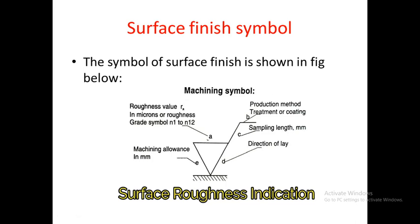The letter C indicates the sampling length — the length selected for determining the roughness value. If we have a workpiece of length L, we do not study the entire length; we select a particular length, and that is the sampling length. The letter B indicates the production method, treatment, or coating — for example, grinding or electroplating — used to obtain the particular surface roughness value. This entire symbol indicates the roughness value, machining allowance, production method, sampling length, and direction of lay.